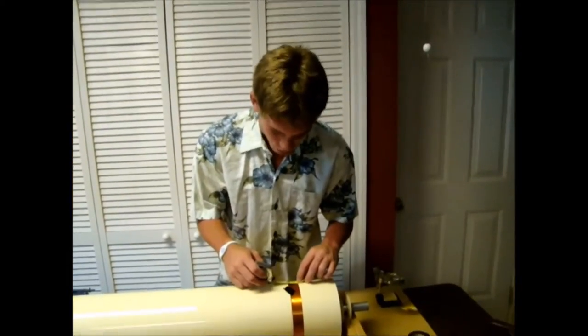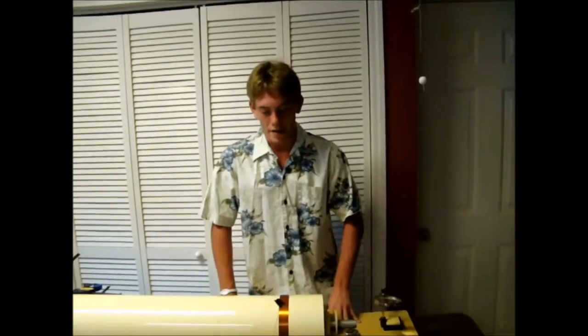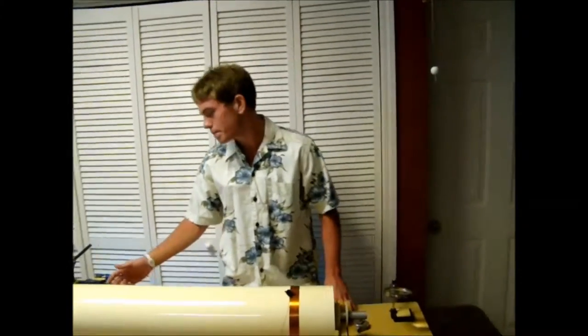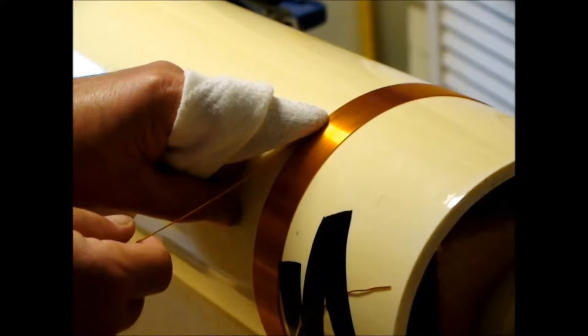Using 22 gauge wire, we're getting approximately 35 turns per inch. We are now ready to start using our drill. Use your finger to keep the wire tight and a small rag to prevent the wire from burning your finger.